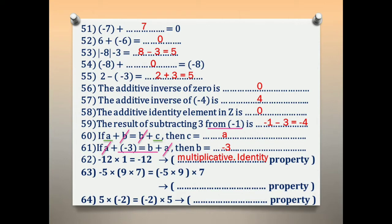Number 63: (negative 5 × 9) × 7 = negative 5 × (9 × 7). We have two numbers grouped inside brackets on each side. This is the associative property.